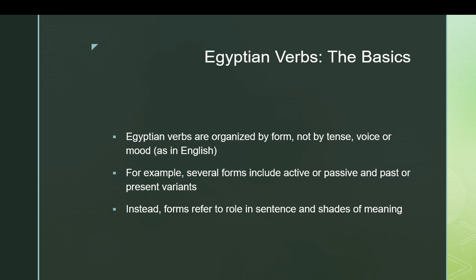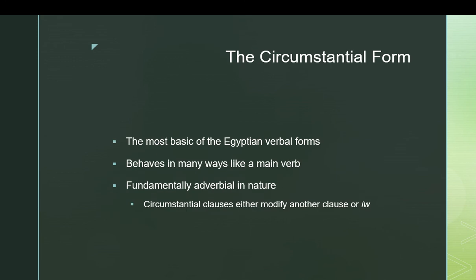Egyptian verbs are organized not like in English, where they tend to be divided up by tense, voice, and mood, but by form. Form meaning probably how the vowels were arranged, and certainly the grammatical function of the verb in the sentence. To give an example, there are different forms that each have active and passive versions, or past and present versions. It's all about the role in a sentence and how the meaning is colored by the form. The most basic form, the one we're going to be discussing today in a little bit of detail, is the circumstantial. It is the most basic Egyptian verb form. It's the default, the dictionary form.